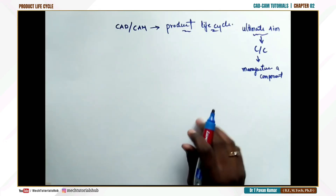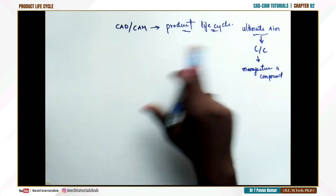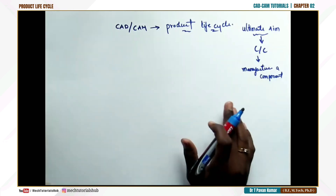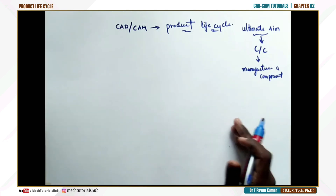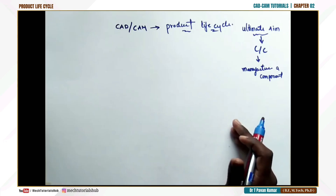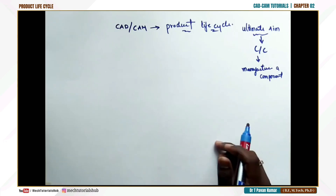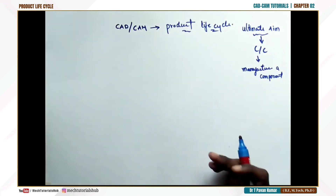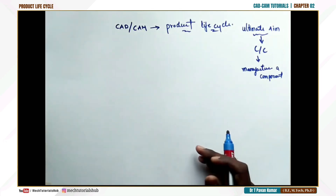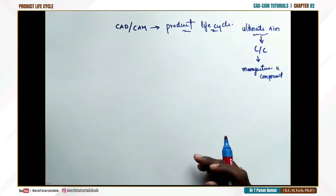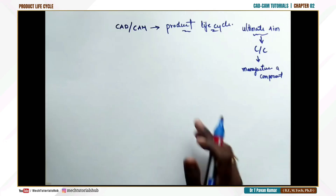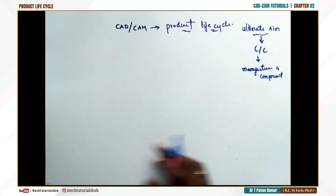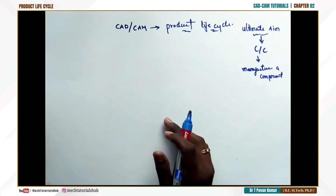If you consider a product, how the cycle is going to be — what are the different levels or steps that need to be followed to reach the manufacturing or production of that particular component — that is our ultimate aim. This product cycle used to be different before the implementation of CAD or CAM.